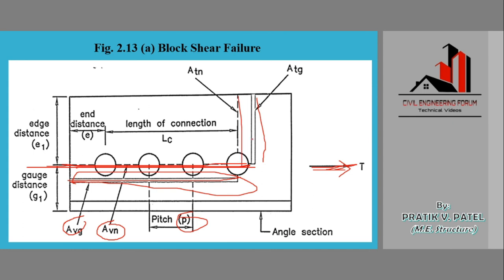The length of the first and last bolt of the connection center to center is known as length of connection, Lc. This is the end distance, edge distance E1, and this is the gauge distance from center of the bolt hole to the end of the angle.